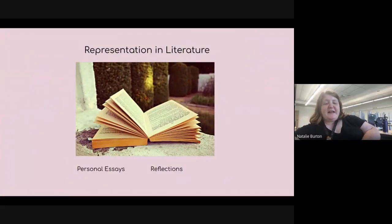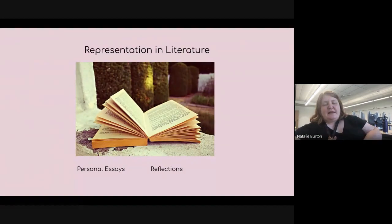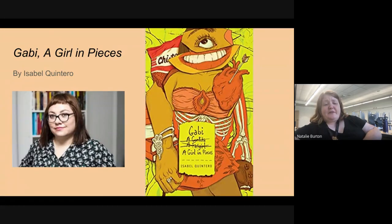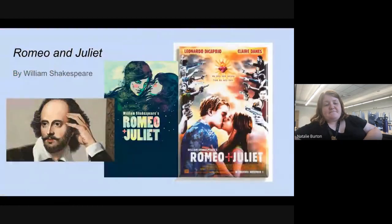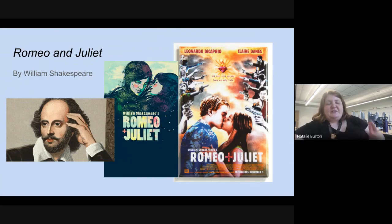Another unit you might be doing in your English class is one about representation in literature, in which you'll read personal essays by people who are reflecting on the importance of seeing someone like themselves in the books that they read and the media that they consume. You might read the novel Gabby, A Girl in Pieces, about a girl in her senior year of high school who's navigating family issues, deciding what to do after high school, and discovering the ways in which poetry can be a source of strength in her life. And you might be doing a unit on Romeo and Juliet, the classic Shakespearean play about two star-crossed lovers, and you'd get to watch theater productions of that and have a grand old time.